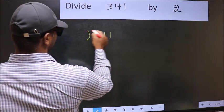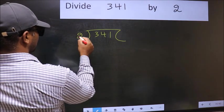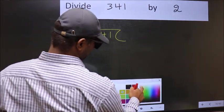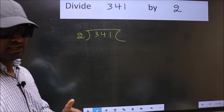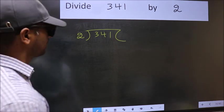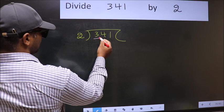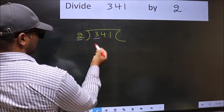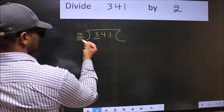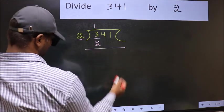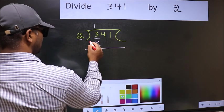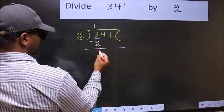341, 2 here. This is your step 1. Next, here we have 3 and here 2. A number close to 3 in 2 table is 2 ones, 2. Now you should subtract. 3 minus 2, 1.